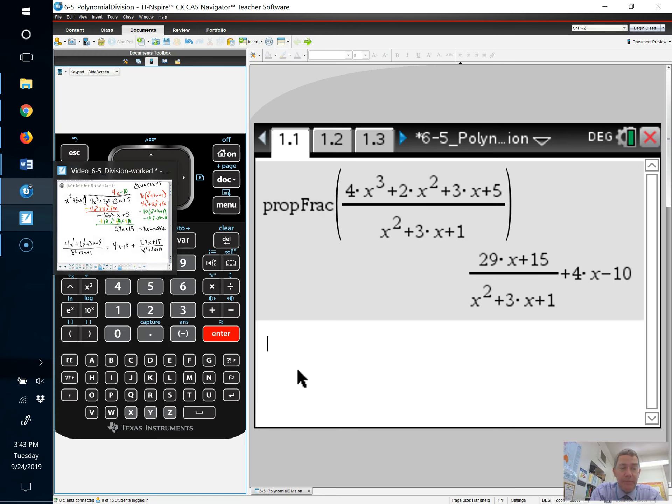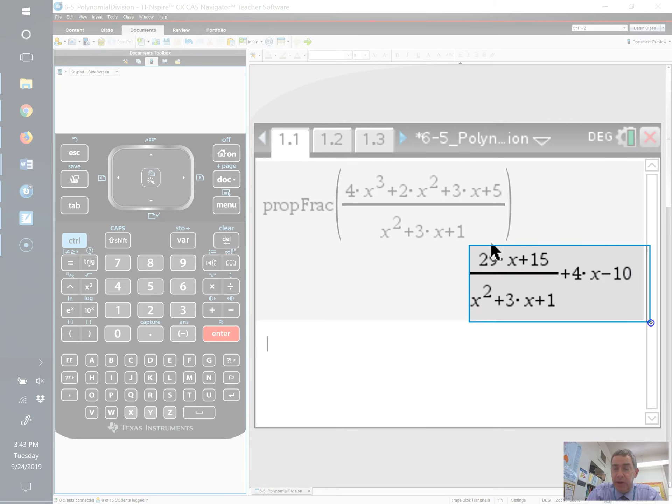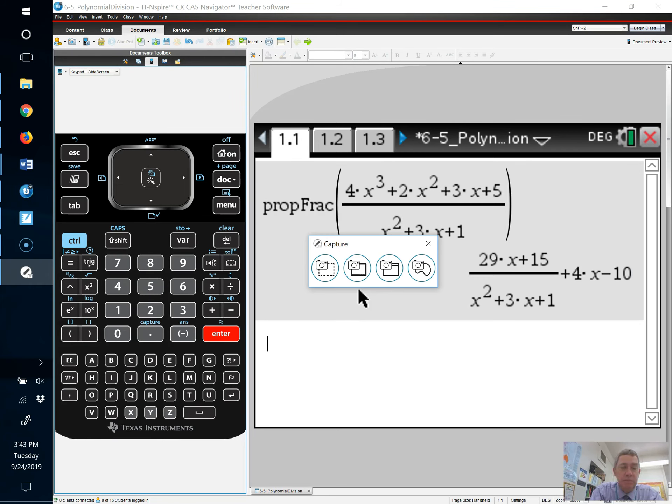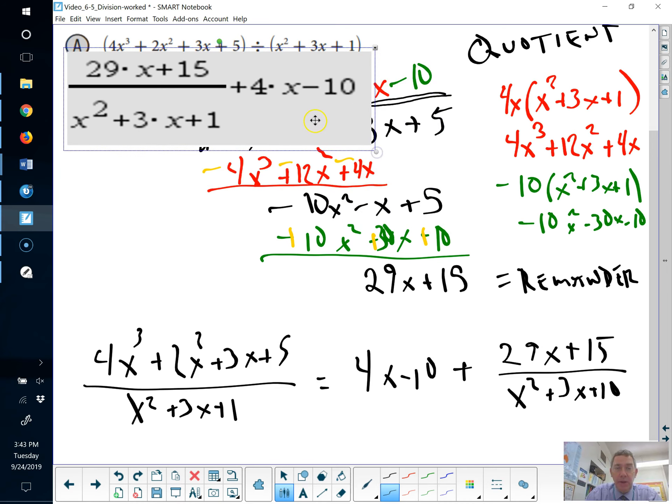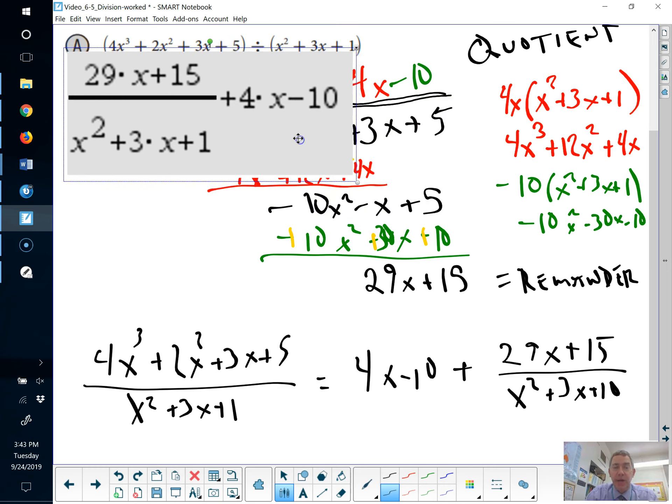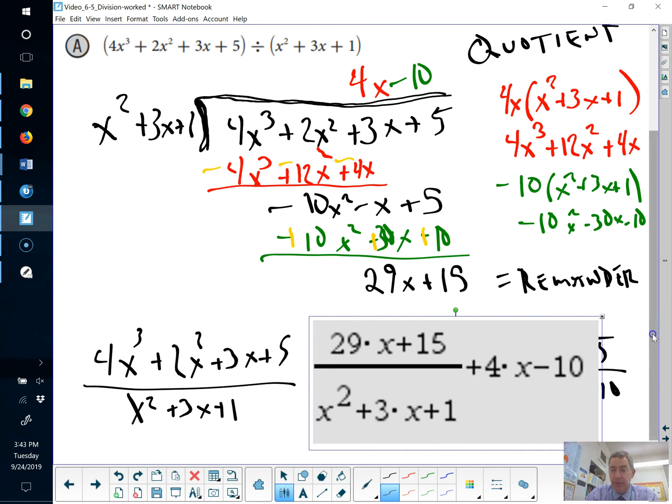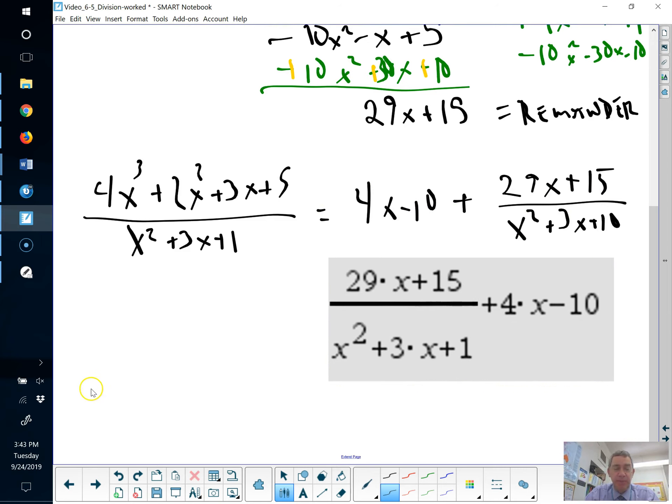If you look here, we've got the 4x minus 10 is on the right-hand side, whereas when we did it, it was on the left-hand side, and the remainder part is written up top. So, you can check and see, did you get it right? And in this case, yep, we got it right. This is the same answer. So, again, the check there was with proper fraction.